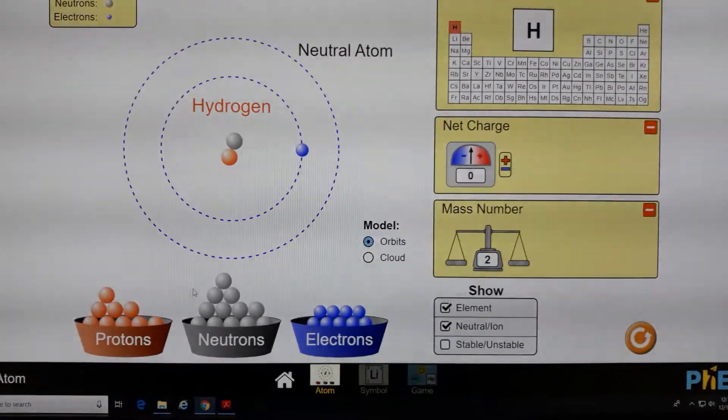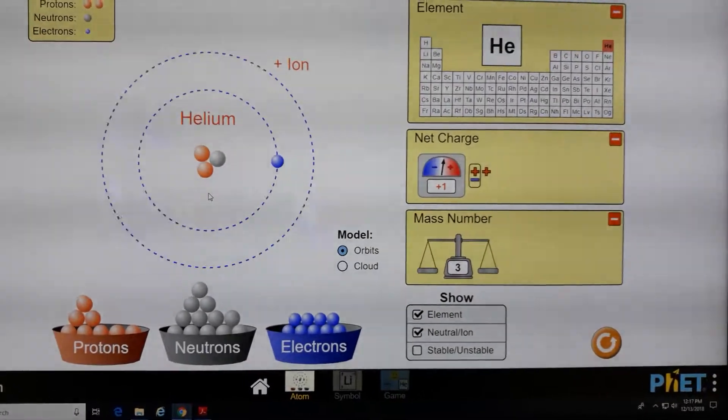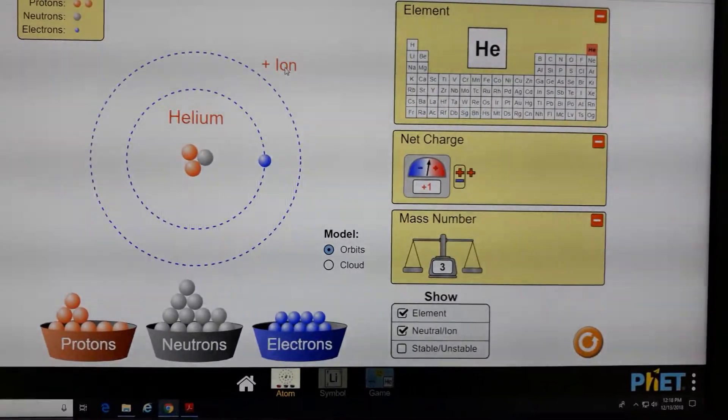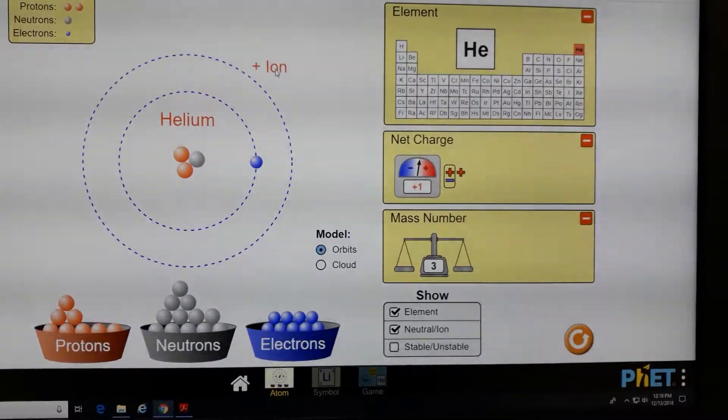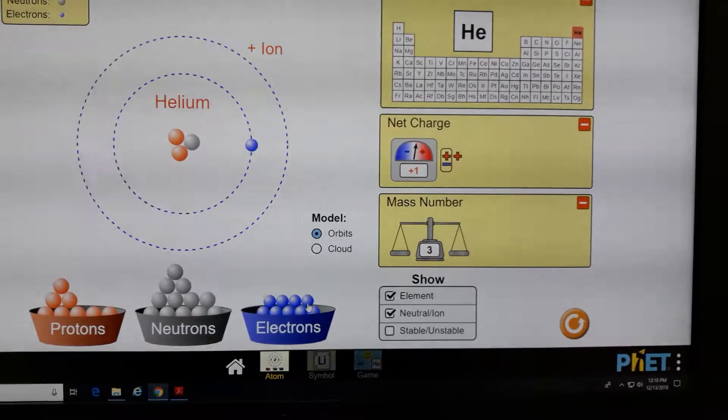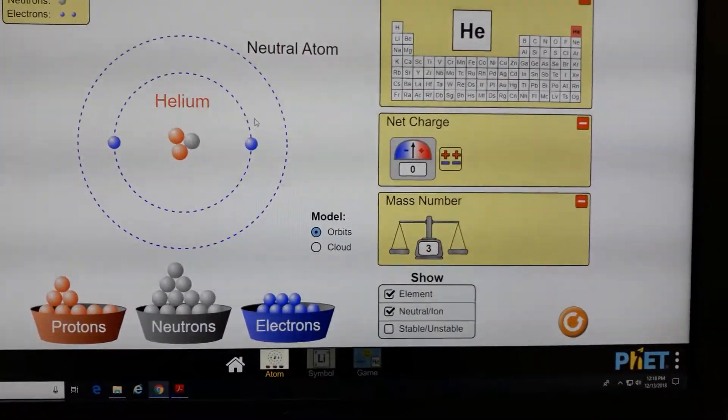If now, for example, you add one more proton here, now instead of hydrogen, we have helium. And this is an ion, it's a positive ion. The charge is plus 1. We can get a neutral atom just by adding one more electron. Now it's a neutral atom.